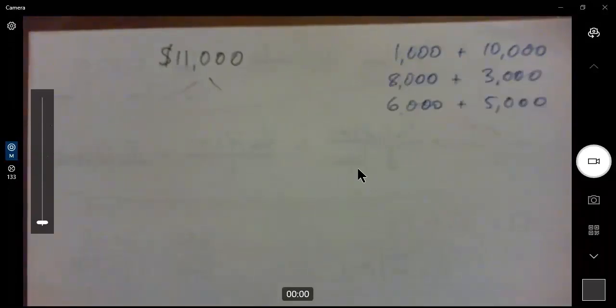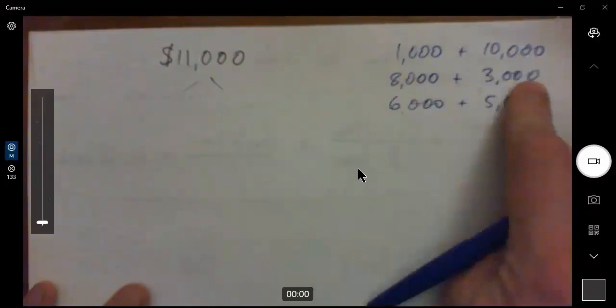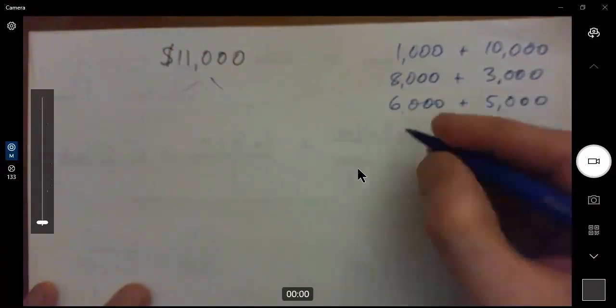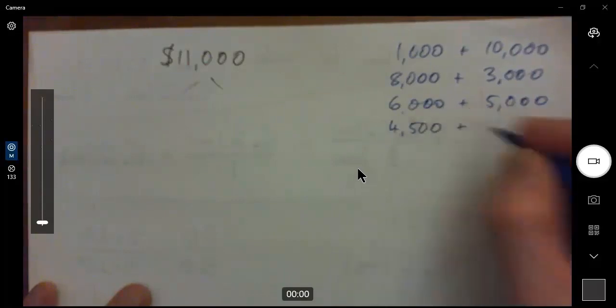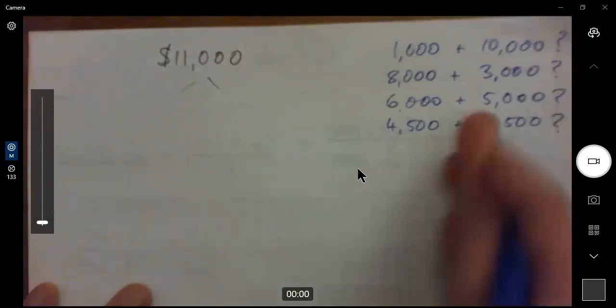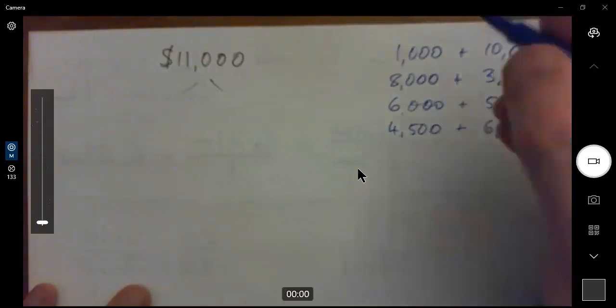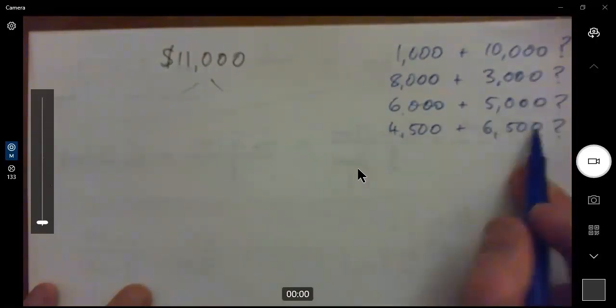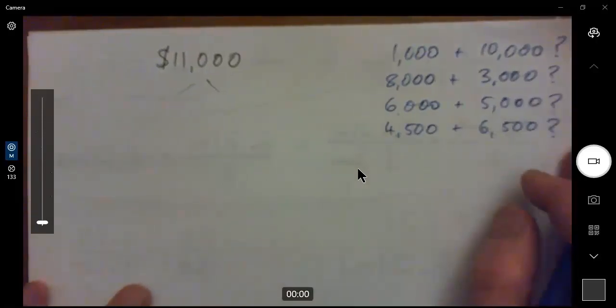So I hope you've all given that a go and press pause and try that. Here's a few more. $8,000 and $3,000, $6,000 and $5,000. You know, you could have $4,500 plus $6,500. And these are all possibilities. We don't know what the answer is, but I just want everyone to agree that these unknown numbers, at least we all agree they add to $11,000, right?